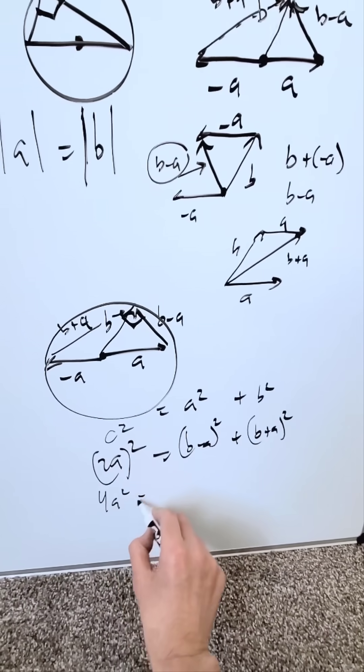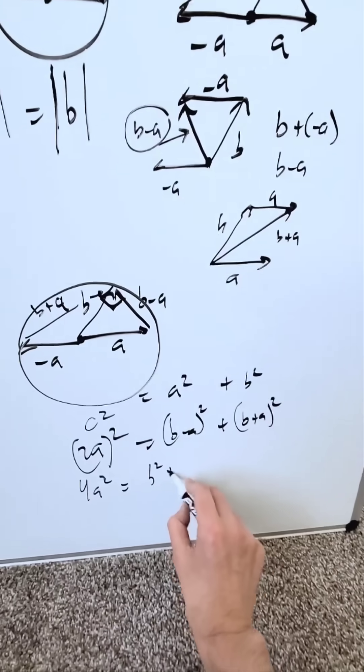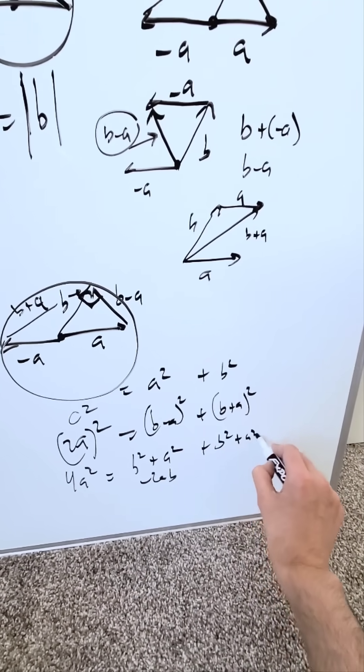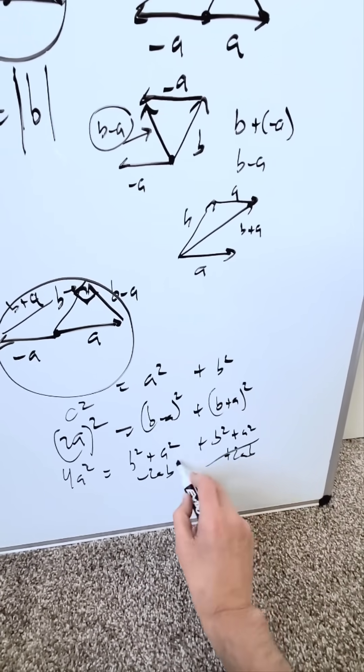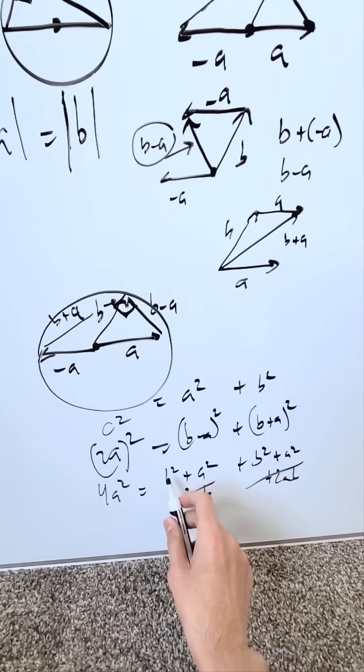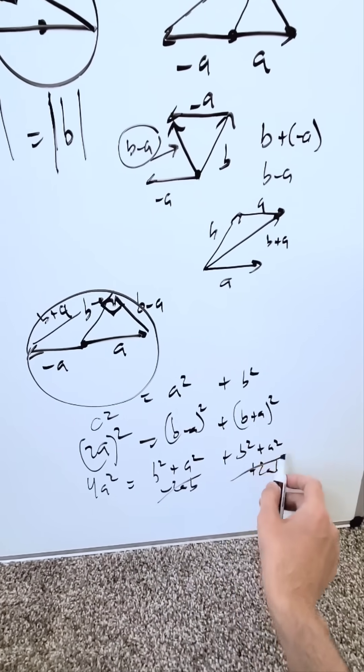Compute this. I have a 4A square is equal to what? B square plus A square minus 2AB and then B square plus A square plus 2AB. These will cancel out. In every instance A is equal to B or B is equal to A so I can substitute. I have an A square plus A square plus A square plus A square.